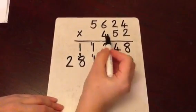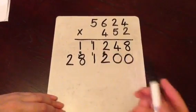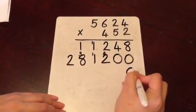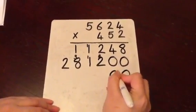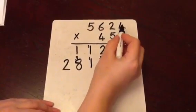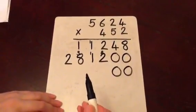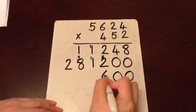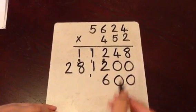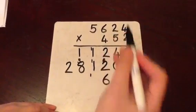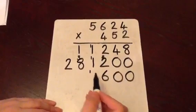Now we're multiplying by 100s. So we can add in a 0 into the units and into the tens column. 4 multiplied by 4 is 16, carrying the 1 across. 4 multiplied by 2 is 8 and the 1 we have carried is 9.